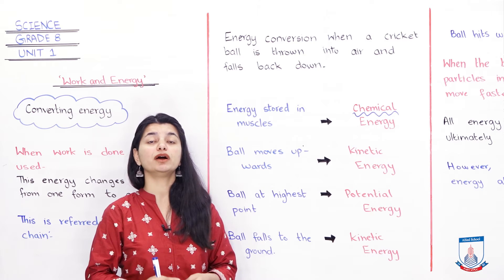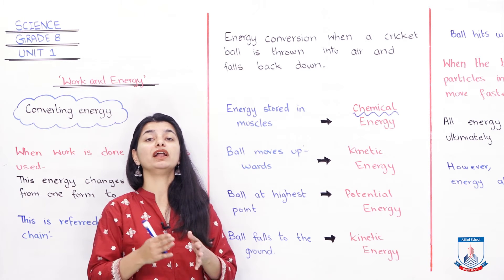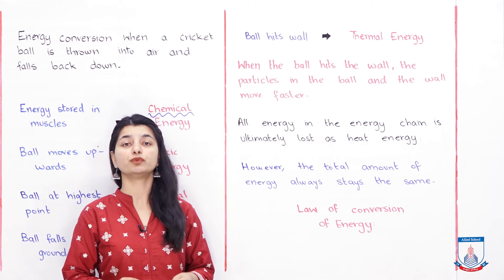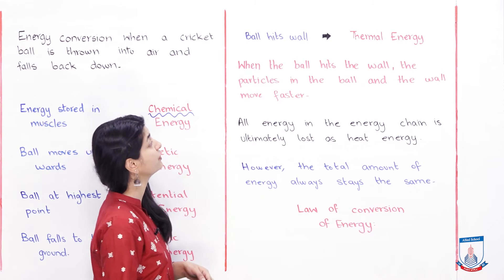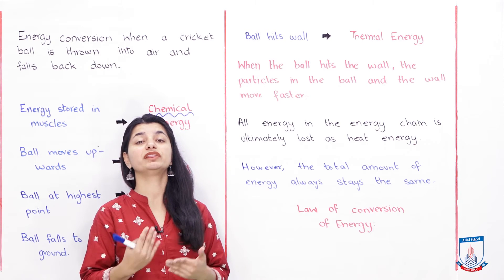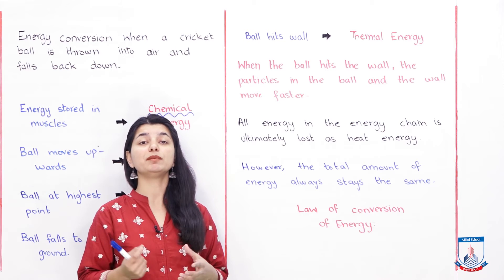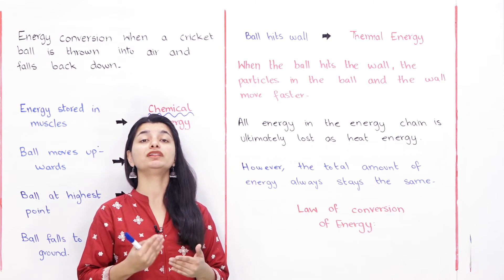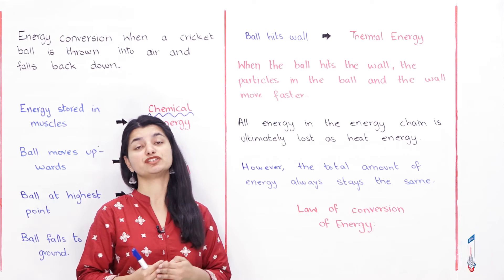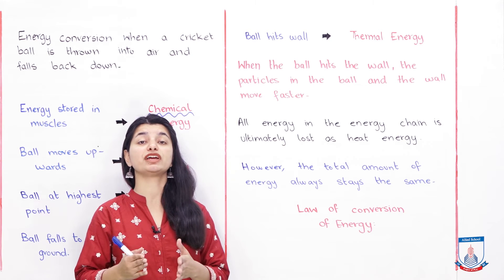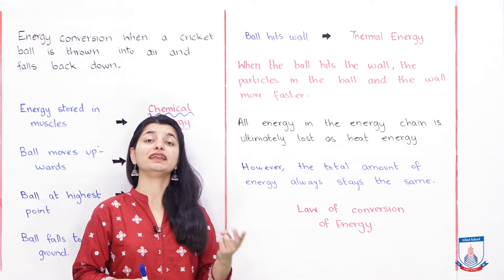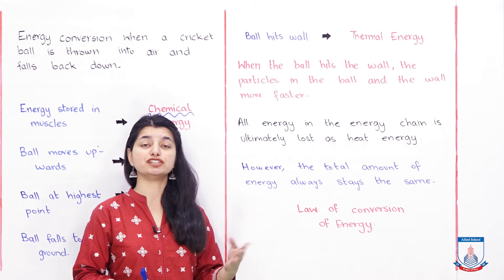And then when it falls back it becomes kinetic energy. At the last stage, when the ball hits the wall, thermal energy is produced — because when the ball hits the wall very strongly, the particles in both the ball and the wall start moving and vibrating, generating heat energy. So the complete energy chain is: chemical energy → kinetic energy → potential energy → kinetic energy → thermal energy.